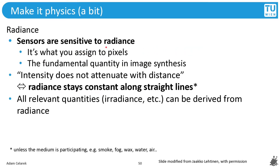So sensors are sensitive to radiance. With sensors I mean for instance the human eye or a camera or our virtual sensor in a rendering system. It's what you assign to pixels. So when you see a rendered picture, the pixels are the measurement of the rendering simulation. This is the fundamental quantity in image synthesis. Intensity does not attenuate with distance. This is what we learned: light travels in straight lines. All relevant quantities, irradiance, etc., can be derived from radiance.